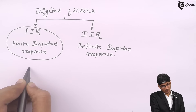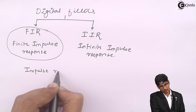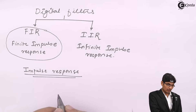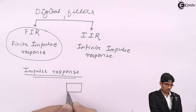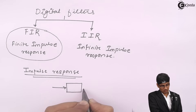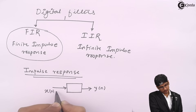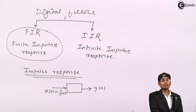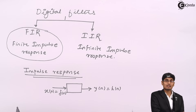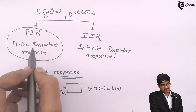Impulse response is nothing but the output of a system when the input is an impulse. So, if I give the input as impulse then I am going to get the output as impulse response. Now, what do you mean by finite impulse response?